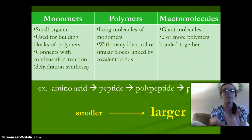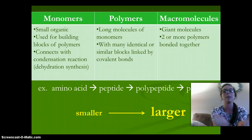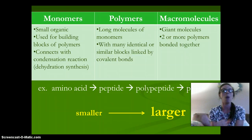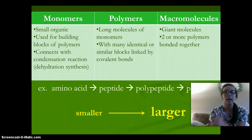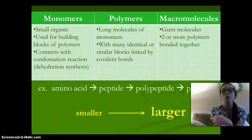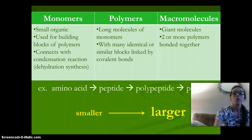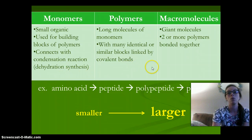Monomers connect with a reaction called a condensation reaction, or dehydration synthesis. The polymers are going to be long links of monomers, or single units, and usually they are identical or similar blocks linked together by covalent bonds. Many polymers, or at least two, are bound together and create giant molecules called macromolecules — from small units, our monomers, all the way up to our large units, which are the macromolecules.